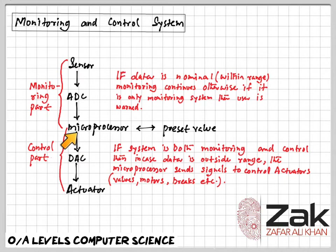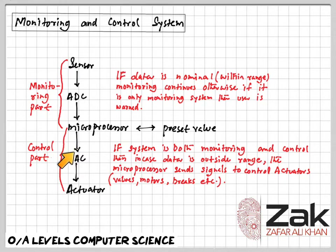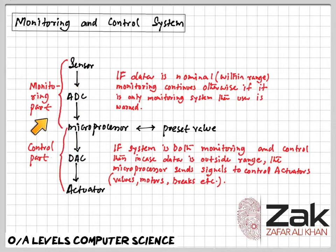If the new data is outside the acceptable range, a warning message is sent to the screen or an alarm is activated. The microprocessor or computer has no effect on what is being monitored — it is simply watching the process. This is monitoring.